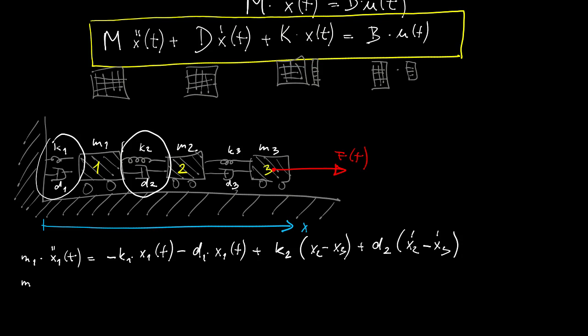Similarly for the second mass again, m2 times the acceleration 2 is equal to the sum of forces acting on the left. Yeah, I forgot the prime in the first equation. And then forces acting on the right.